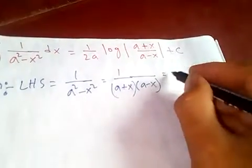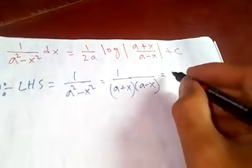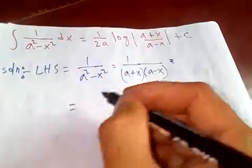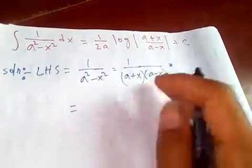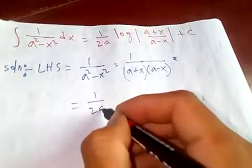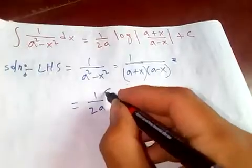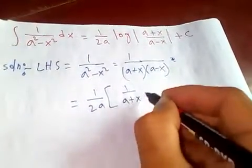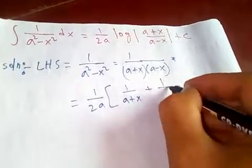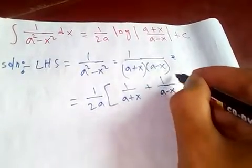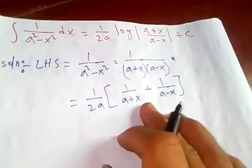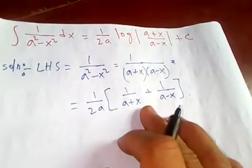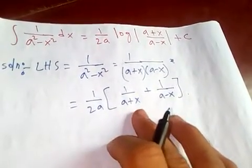If you simplify this by partial fractions, you get: 1/(a²-x²) = (1/2a)[1/(a+x) + 1/(a-x)]. Now we're going to take the integration.